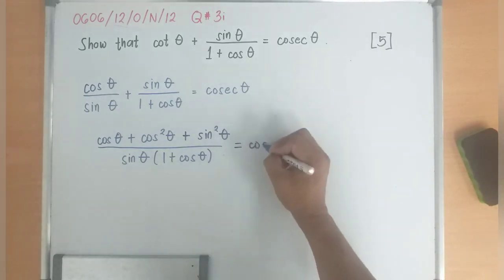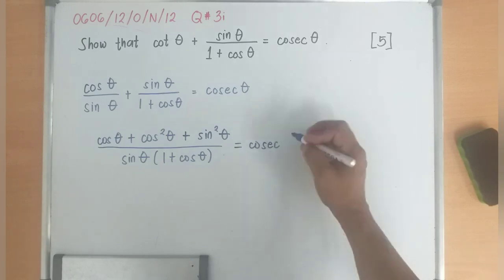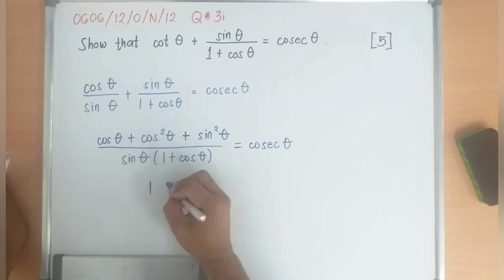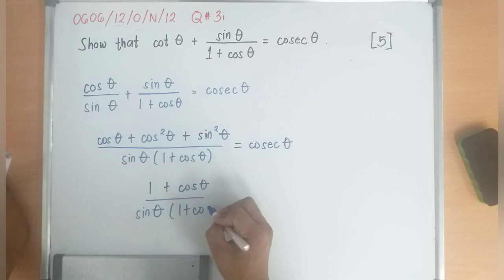So you will now be left with 1 plus cosine theta divided by sine theta times 1 plus cosine theta.